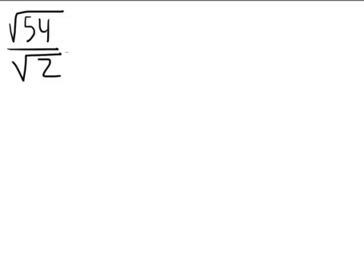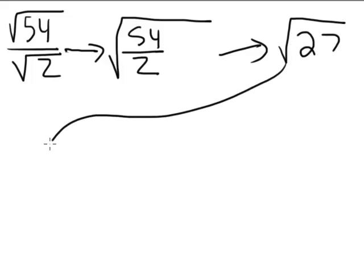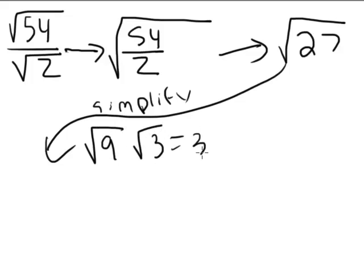Let's try another problem: the square root of 54 divided by the square root of 2. Our approach is to combine under one radical sign from the start, then simplify. 54 divided by 2 is 27. The square root of 27 is the square root of 9 times the square root of 3, or 3 root 3. Simply put the expression under one square root, simplify the division, and then simplify the radical expression.